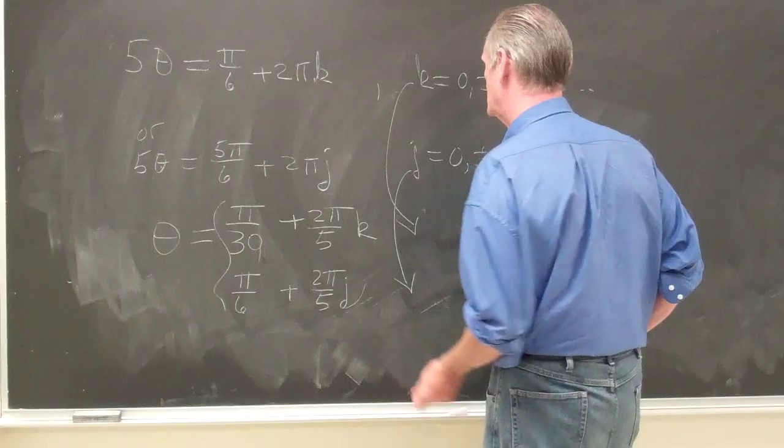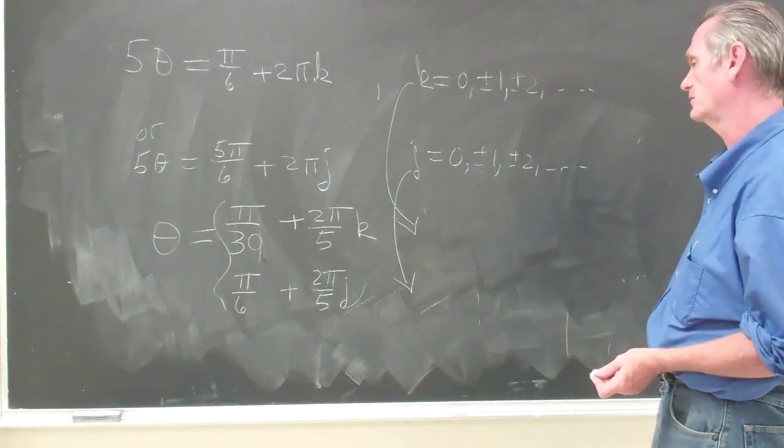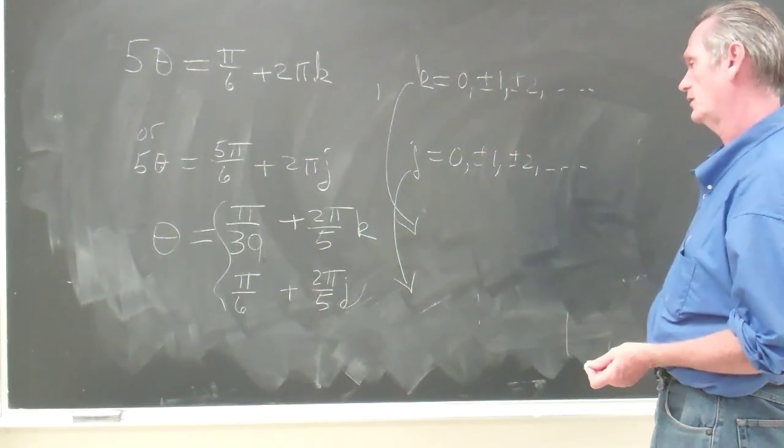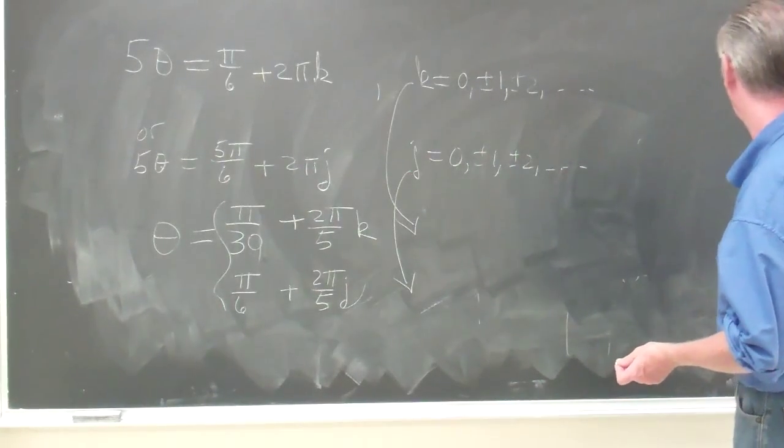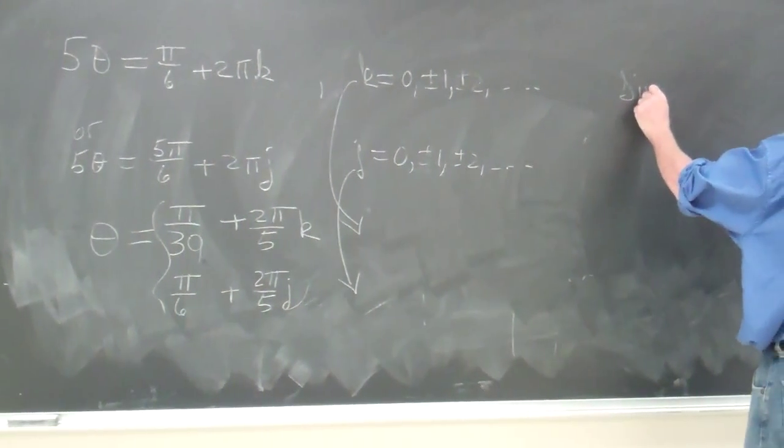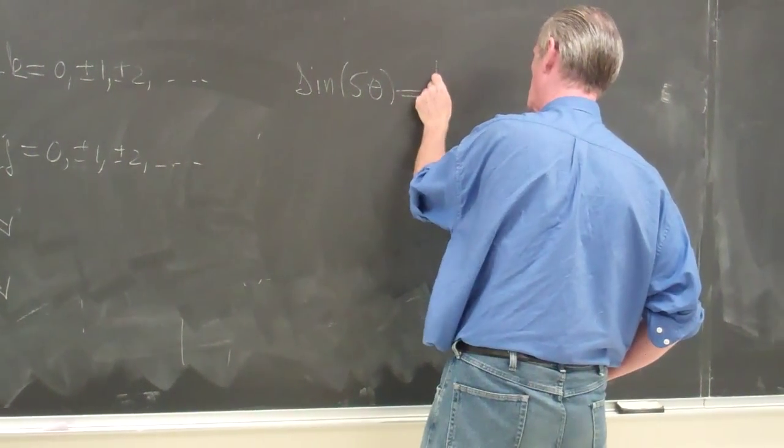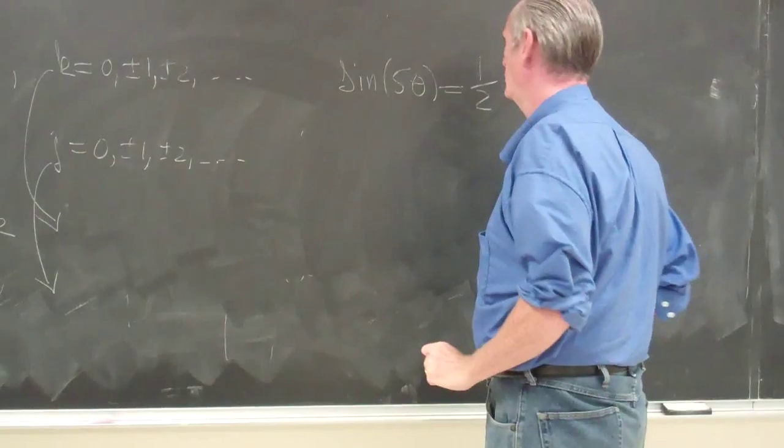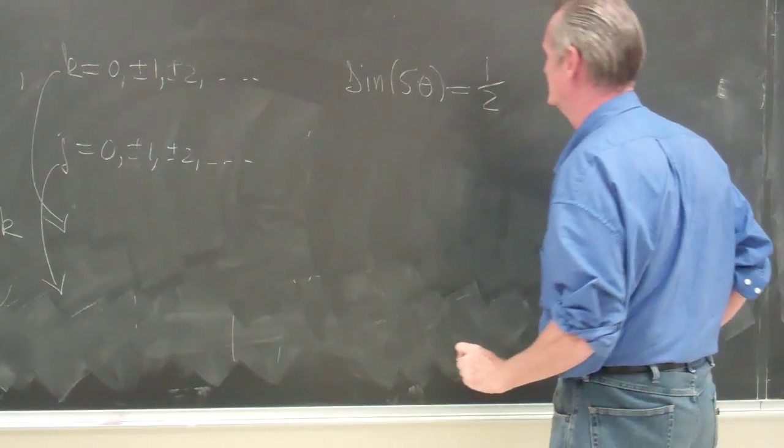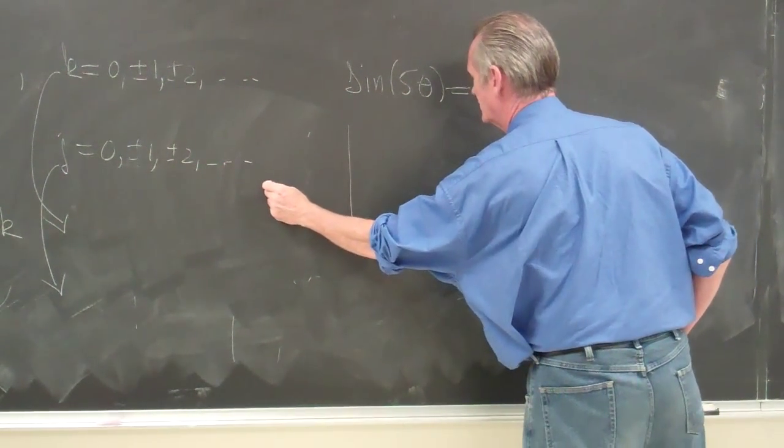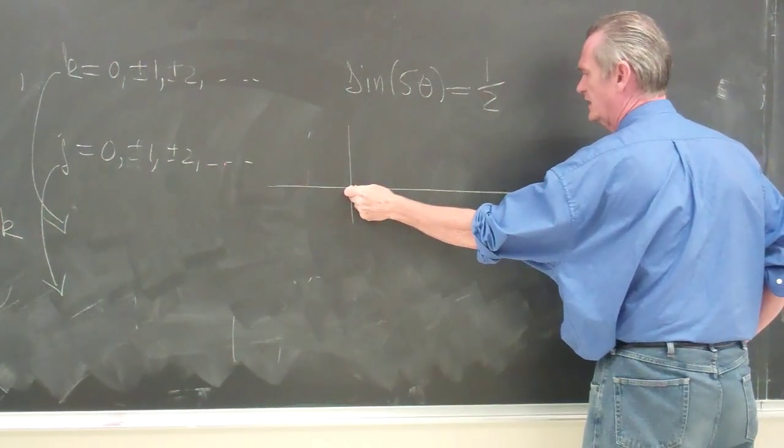Now I want to discuss these solutions just a little bit more. We've got the equation sine of 5 theta is equal to 1 half. We want to find out how often that happens. So another way of thinking about the problem is to graph a sine curve.